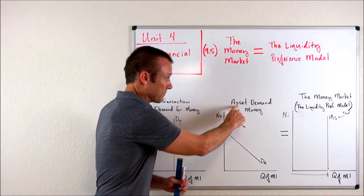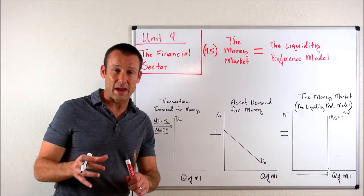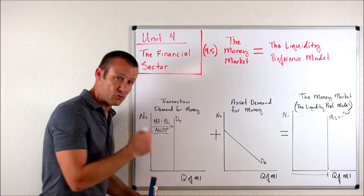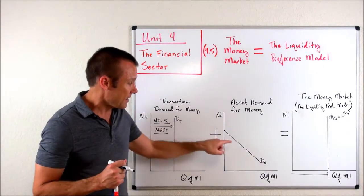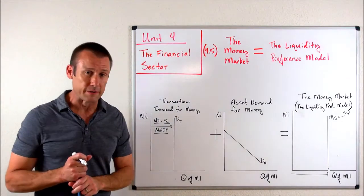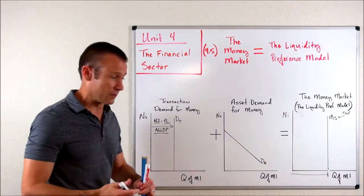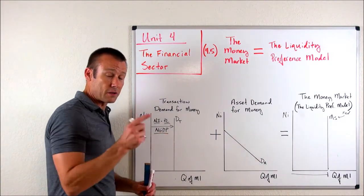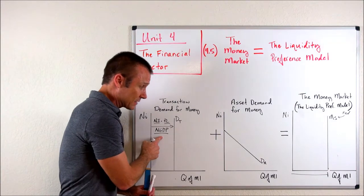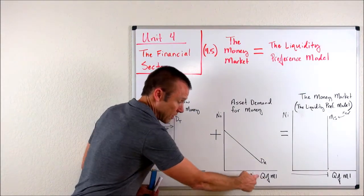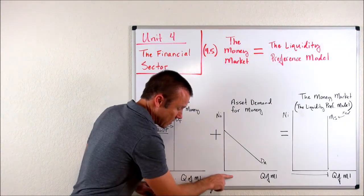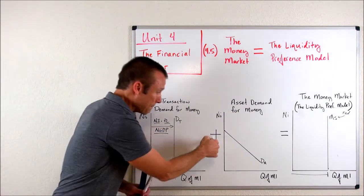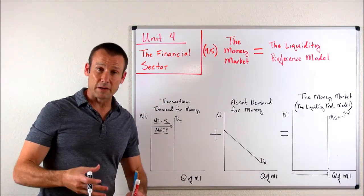There is another component of money demand: the asset demand for money. This is our demand for money as an asset above and beyond our demand for money to do basic transactions. This one is absolutely sensitive to the nominal interest rate, and it is downward sloping, showing an inverse relationship. As the nominal interest rate goes up, the demand for money above and beyond what's needed for basic transactions decreases. Nominal interest rate increases — demand for M1 decreases. Nominal interest rate goes down — demand for M1 increases.